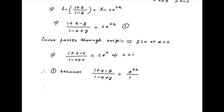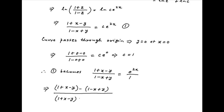Now applying componendo dividendo, the left-hand side can be written as [(1 plus x minus y) minus (1 minus x plus y)] divided by [(1 plus x minus y) plus (1 minus x plus y)] is equal to, on the right-hand side, (e raised to the power 2x minus 1) divided by (e raised to the power 2x plus 1). On the left-hand side, 1 cancels in the numerator, and x minus y cancels in the denominator.